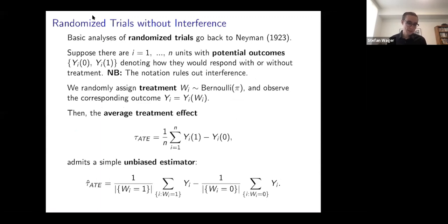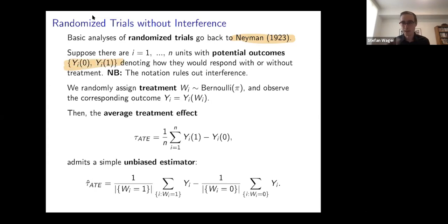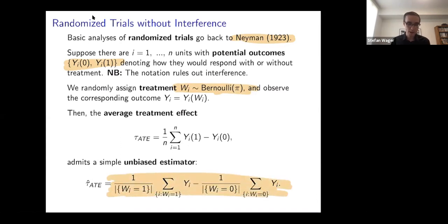I'll go over this very quickly because this is familiar to everyone here. Basic analysis of randomized trials goes back to Neyman. The idea is that to measure the effect of a binary treatment on a real-valued outcome, you posit potential outcomes Y0, Y1 corresponding to the outcome you would have observed if the i-th unit had been treated or not. The main result is that if treatment is randomized — that is, your treatments Wi are exogenous Bernoulli coin flips with probability pi — then the difference in means is unbiased for the average treatment effect, which is the average difference in potential outcomes. This is a very robust result that needs essentially no assumptions.